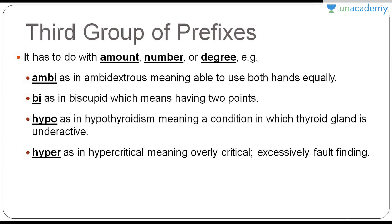The next category of prefixes deals with amount, number, or degree. Ambi means both, as in ambidextrous — a person who can use both hands skillfully and equally. Bi means two, as in bicuspid, which means having two points. Hypo means under, as in hypothyroidism — a condition in which the thyroid gland is underactive. In contrast, hyper means over or excessively, as in hypercritical, meaning overly or excessively fault-finding.